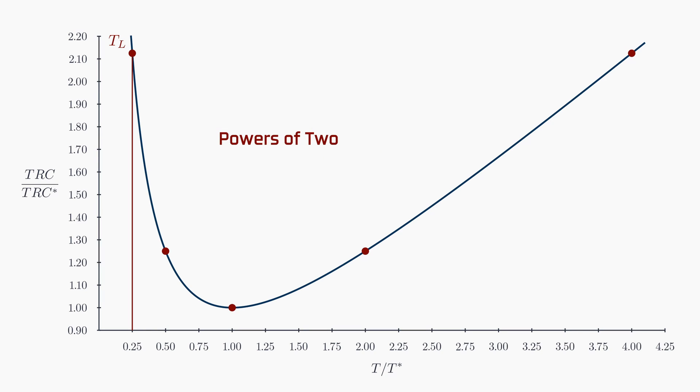This approach limits the reorder intervals to TL multiplied by a power of 2. The options include TL itself, 2 times TL, 2 squared times TL, 2 cubed times TL, 2 to the fourth times TL, and so forth. You might be wondering, how exactly does this policy help?